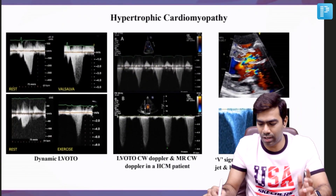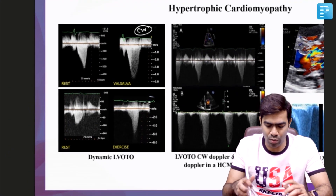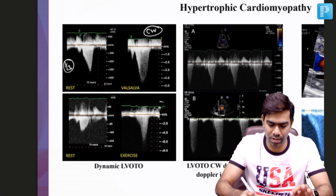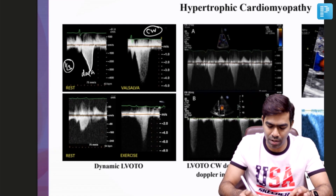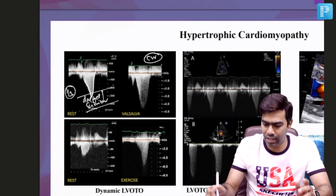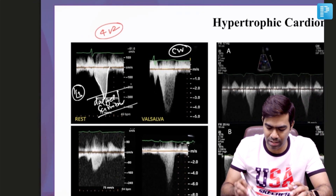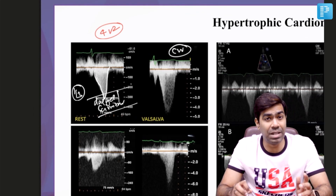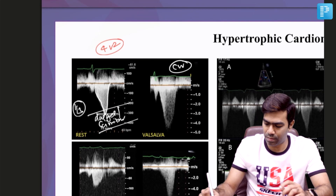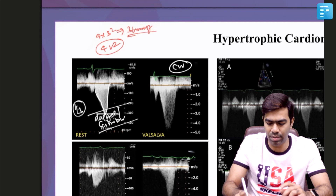Coming to other echocardiographic findings, you can use continuous wave Doppler at the LVOT to measure the LVOT gradient. One-third of patients will have a gradient at rest. The typical shape of the LVOT gradient in continuous wave Doppler is the classic dagger or scimitar-shaped waveform — very sharp and very classic. The gradient is measured using the formula 4V². In this patient, the resting gradient velocity is approximately 3 meters per second, so 4 × 3² gives approximately 36 mmHg. Anything more than 30 mmHg is significant at the LVOT.